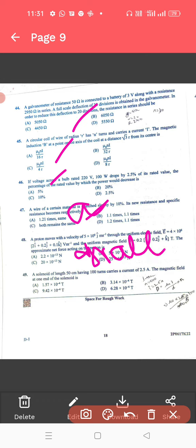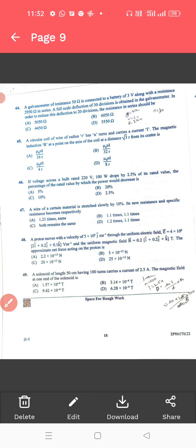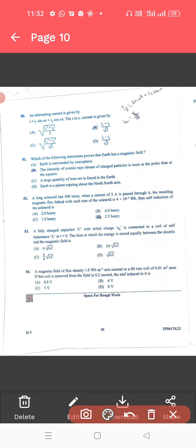Then, 49, a solenoid of length. For 49, the correct answer is 3.14 into, that is, B is a correct answer. So, we will move to the next, last part 1 page.